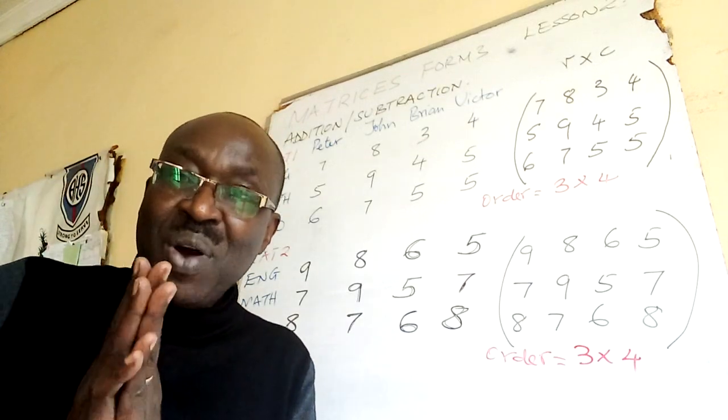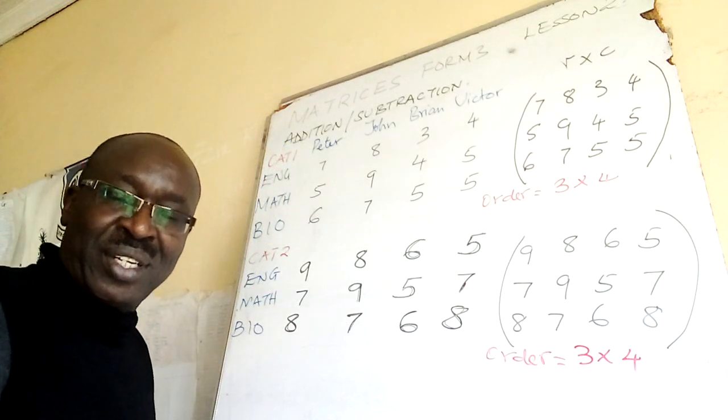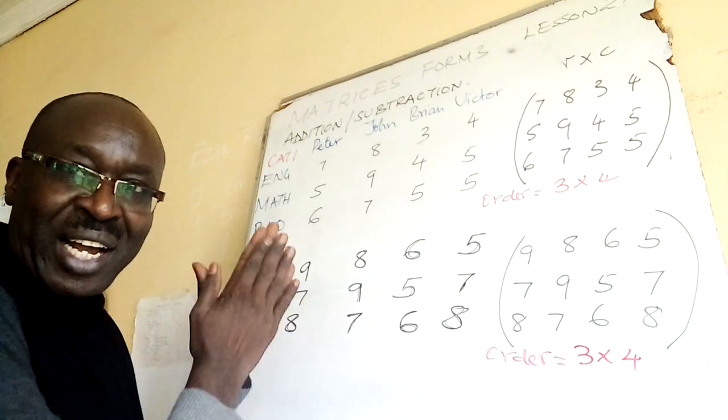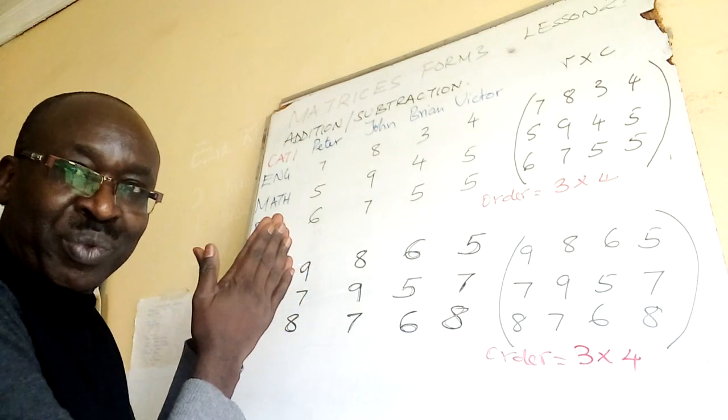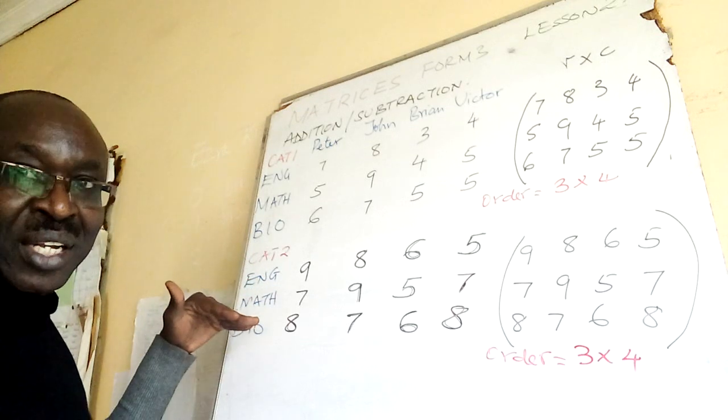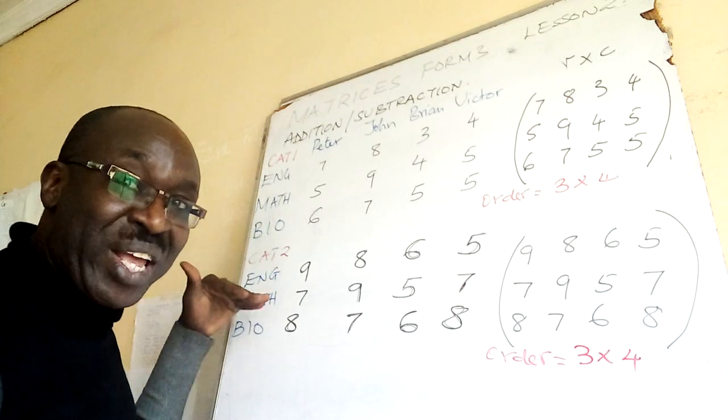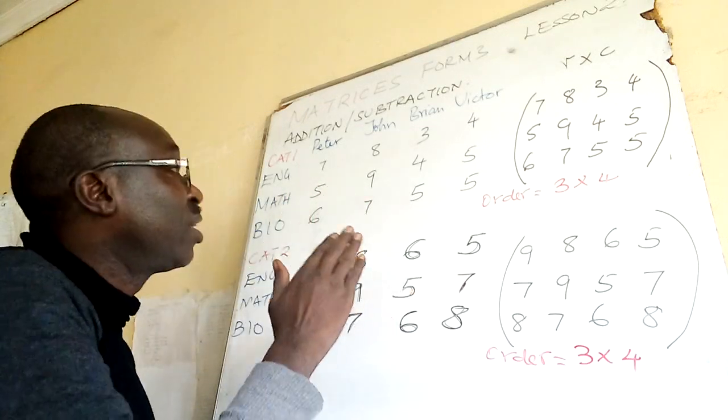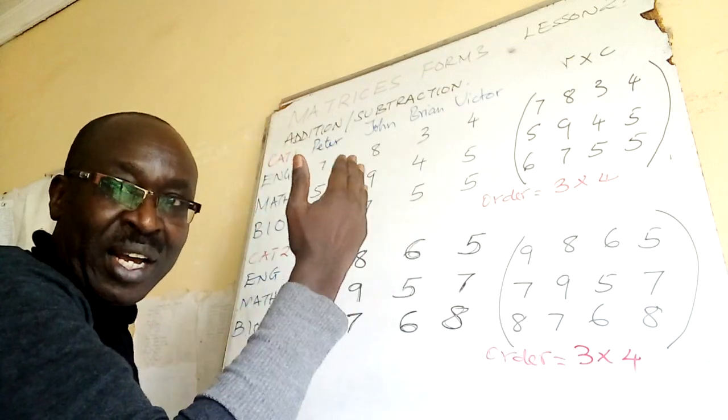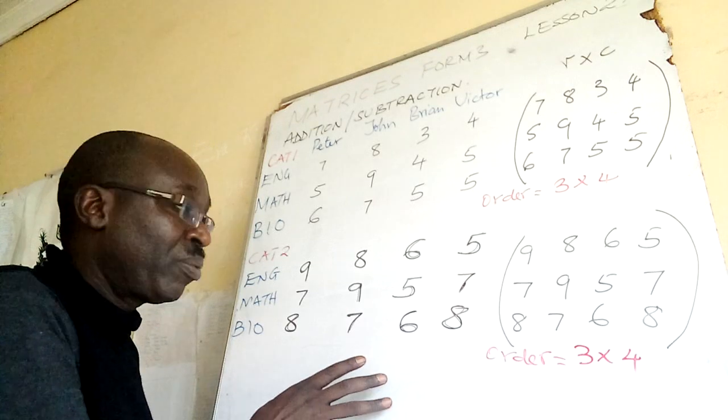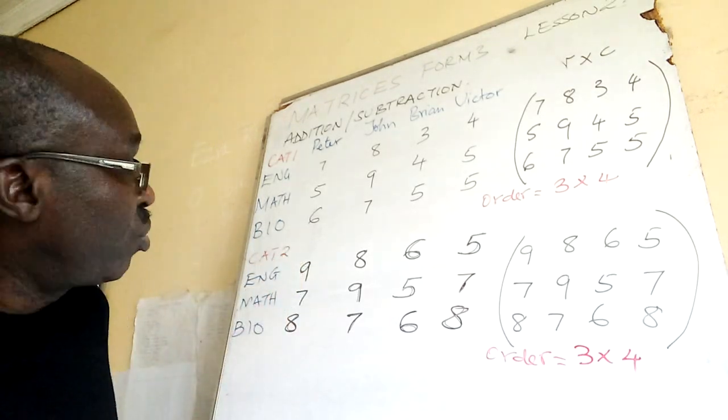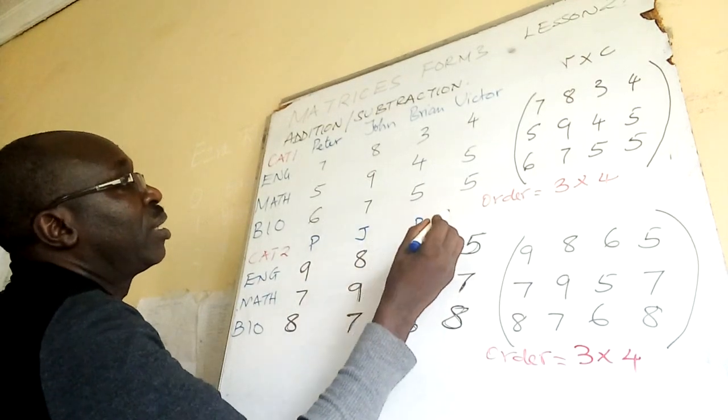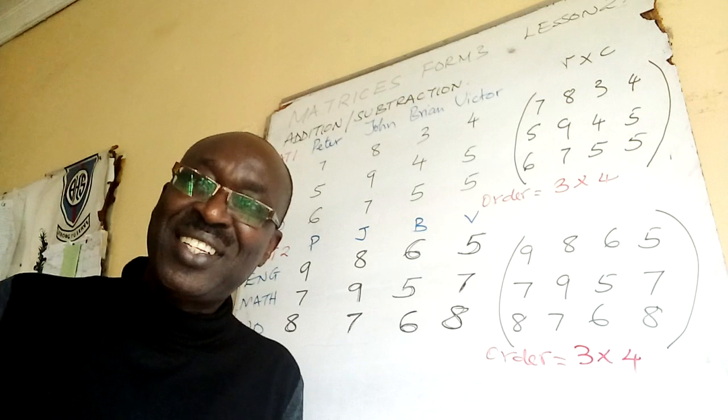Now, I want you to observe that I maintain the positions. I maintain the position of my table. The subjects, the way I wrote them in the first table is the same way I've written in the second table. The names are in the same order. Peter, John, Brian, Victor. Even in the second table, you still have Peter, and then John, Brian, Victor. This is going to be very easy and interesting.